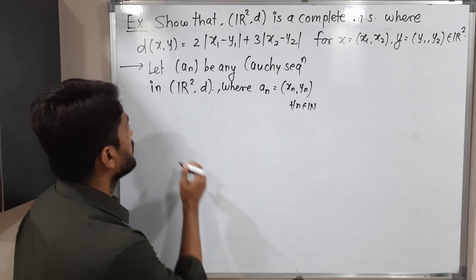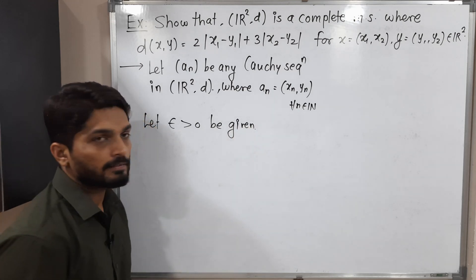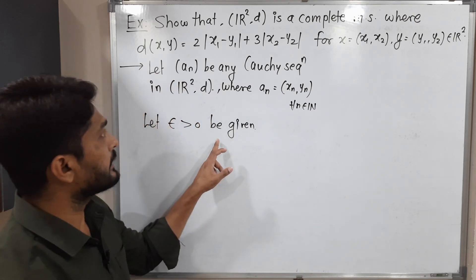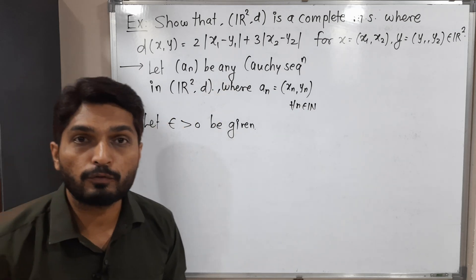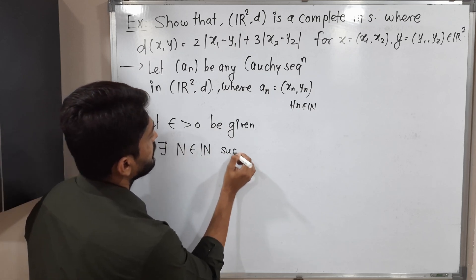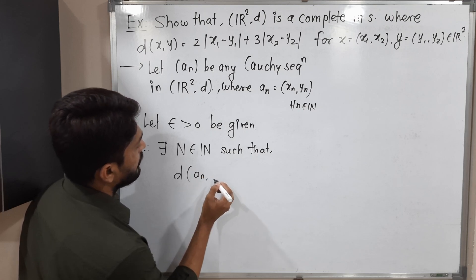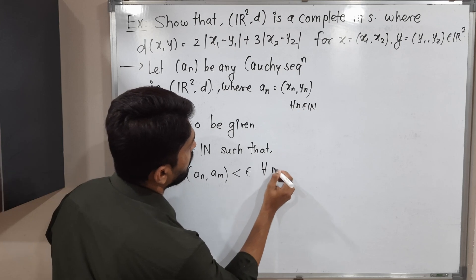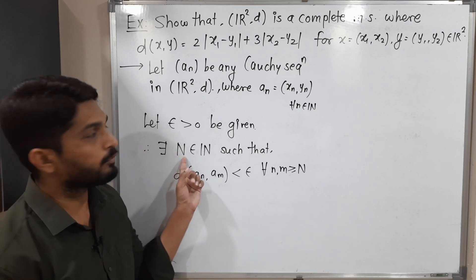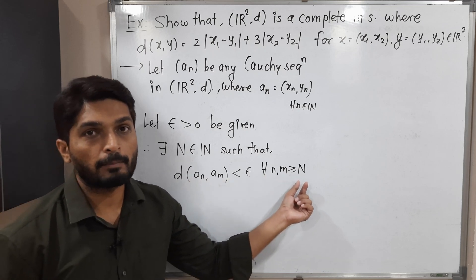Let ε > 0 be given. Since it is a Cauchy sequence, by definition of Cauchy sequence, there exists N belonging to the set of natural numbers such that D(Nₙ, Nₘ) < ε for all n, m greater than or equal to capital N.